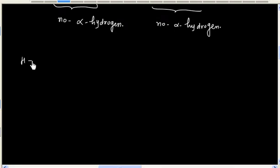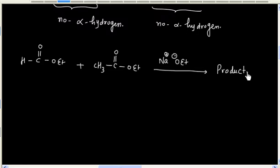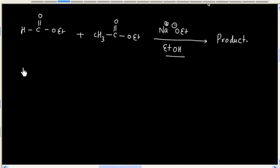Now let us consider an example of cross-Claisen condensation. So we have this reaction and we have the right product. Ethyl alcohol is used as solvent. Now in the first step, we have an acid-base reaction.